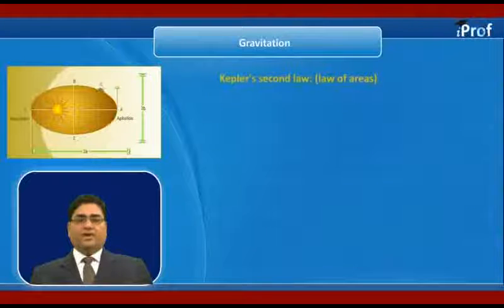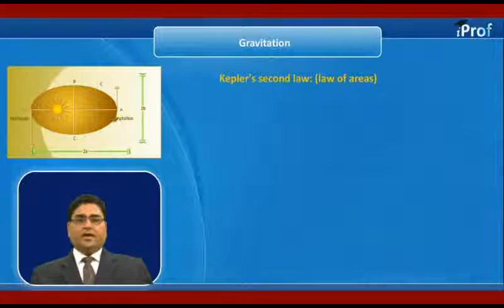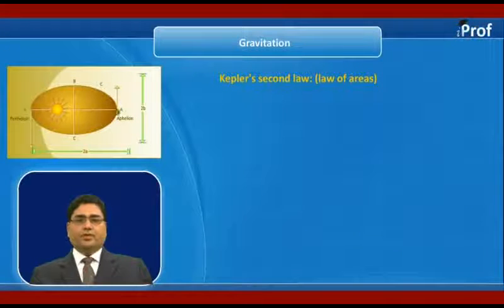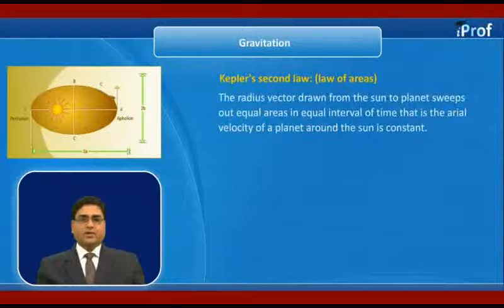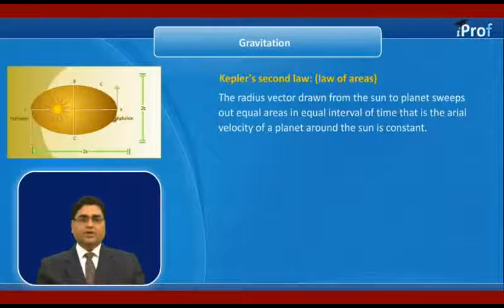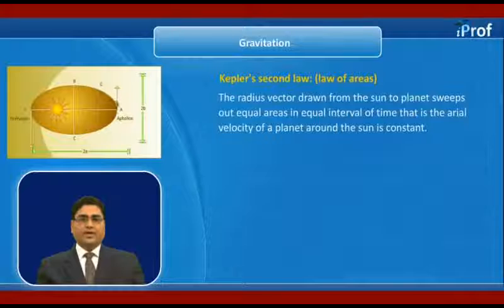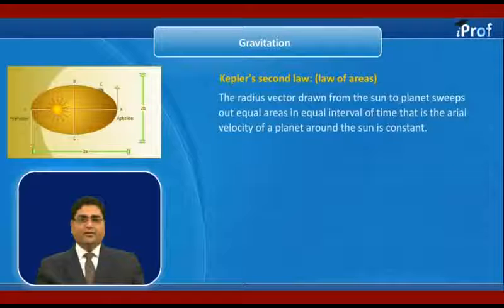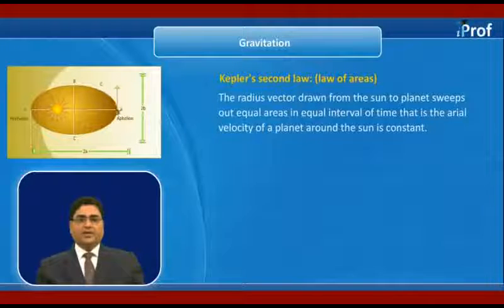Now we will study Kepler's second law, law of areas. The radius vector drawn from the Sun to planet sweeps out equal areas in equal intervals of time. That is, the areal velocity of a planet around the Sun is constant.